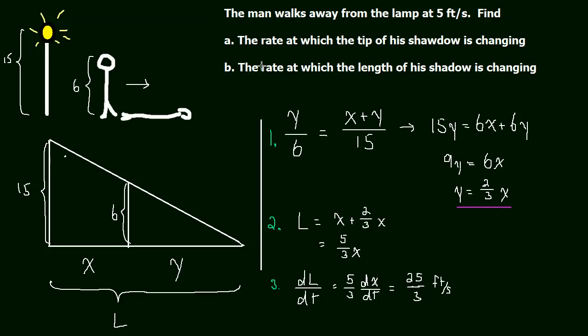So let's look at the next question. The rate at which the length of his shadow is changing. Well, that's going to be what? Looking at this diagram, what is that going to be? The length of his shadow is y. So the rate at which his shadow changes is dy dt. So now let's go back. Let's go back to this step where we said y equals two-thirds x. Now let's solve for x. x equals three-halves y.